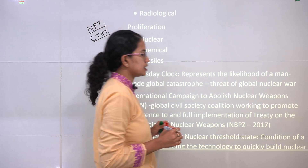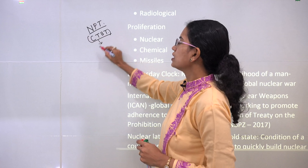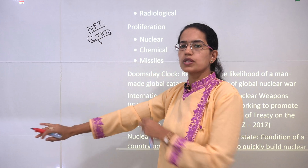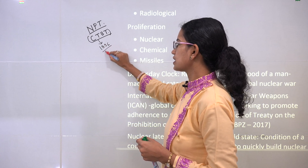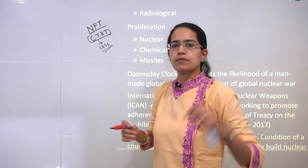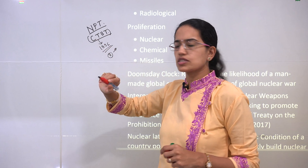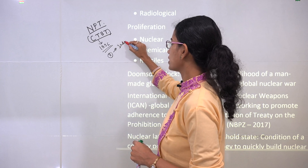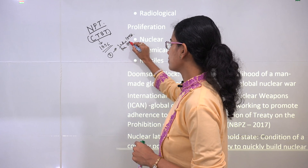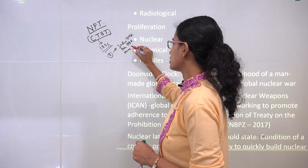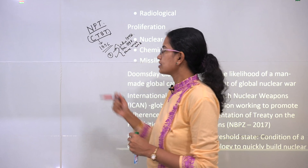Both of these treaties work towards disarmament. The Comprehensive Test Ban Treaty talks about every nation being free from nuclear weapons. It was basically signed in 1996. However, some countries were not party to it, and three nations conducted nuclear tests even after the CTBT was released: India in 1998, Pakistan in 1998, and North Korea in 2006 and 2008. All three were not party to the CTBT.